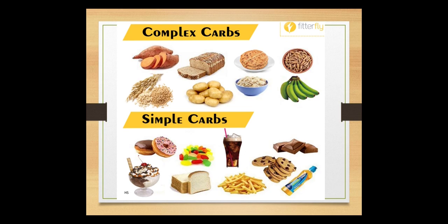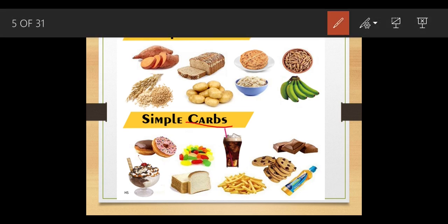Looking at various food items like wheat, potatoes, bananas, chips, bread, and chocolates, they have been classified into complex carbohydrates and simple carbohydrates. Note that the terms 'complex' and 'simple' carbohydrates are not part of the syllabus, but as a general understanding: simple carbohydrates are easily digestible, while complex carbohydrates take more time to digest. 'Carbs' is simply a shortcut for carbohydrates.